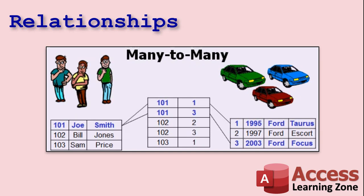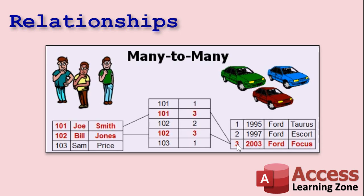A many-to-many relationship is more complicated. Many people can drive many cars, but each car can also be driven by multiple drivers. Another good example is students and classes — each student can enroll in multiple classes, and each class can have multiple students. To properly implement a many-to-many relationship, you need a third table called a junction table. For example, customer 101 (Joe Smith) can drive cars 1 and 3, and car 3 (the Ford Focus) can be driven by both 101 and 102.